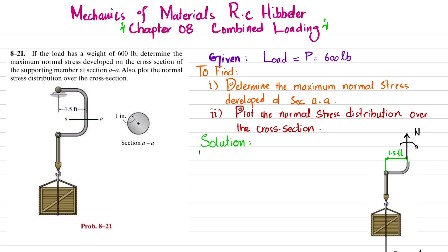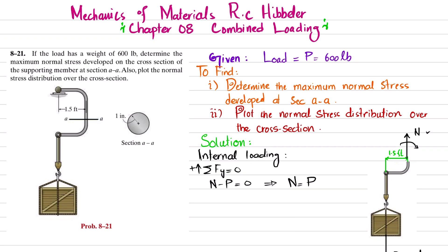For internal loading, we will use the equilibrium conditions. The first equilibrium condition is that the sum of all forces along the y-direction must be equal to zero. Upward force is taken as positive, so N is upward and P is downward: N minus P equals zero, so N equals P, which is 600 pounds.